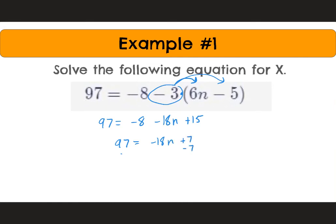Subtract 7 from both sides, giving us 90 is equal to negative 18n. And then we'll divide by negative 18. This will give us our final answer of x equals 5. Again, check your solution by plugging it in.